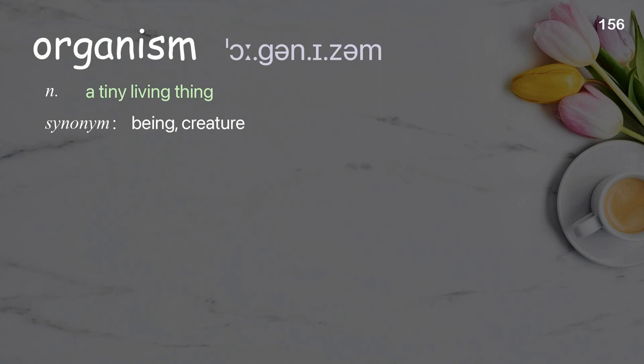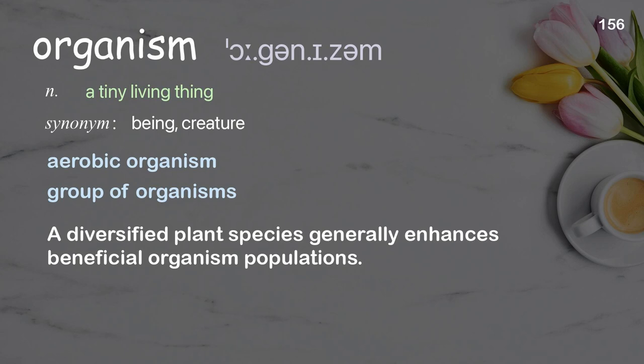Organism: A tiny living thing. Examples: aerobic organism. A diversified plant species generally enhances beneficial organism populations.